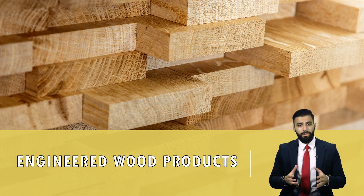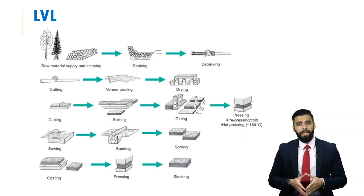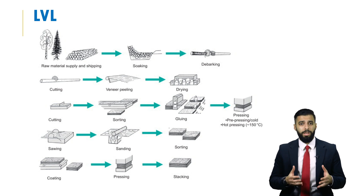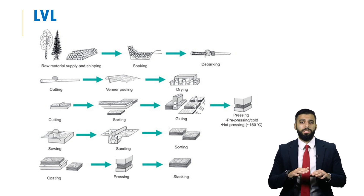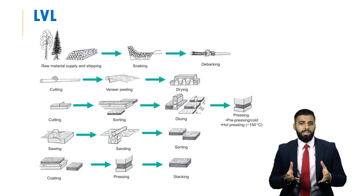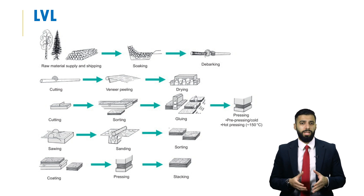Let's start by looking at LVL — laminated veneer lumber — the first engineered wood product. It is made from sliced thin veneer laid in parallel arrangements and bonded together under high pressure and heat. The veneers are glued together and pressed with the grain of all veneers oriented in the same direction. This makes LVL stronger, straighter, and more uniform than solid timber and overcomes some of timber's natural limitations, such as strength-reducing knots.